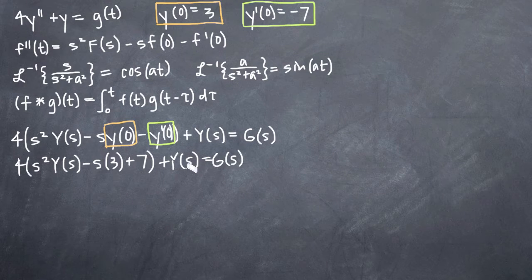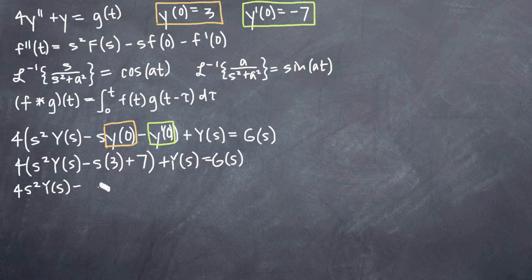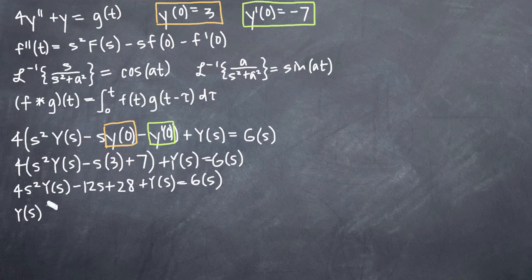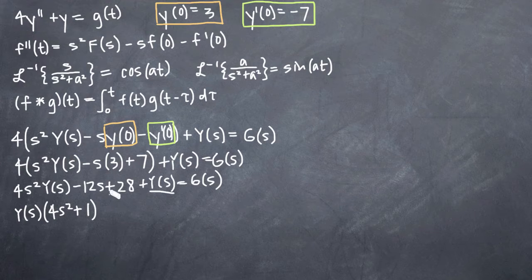Remember that we're solving for Y(s) in terms of G(s). Now we can distribute the 4: we get 4s² Y(s) minus 12s plus 28, plus Y(s) equals G(s). Now we want to group our Y(s) terms together. We can factor out Y(s) and get Y(s) times (4s² plus 1), and then everything else is minus 12s plus 28, so minus 12s plus 28 equals G(s).